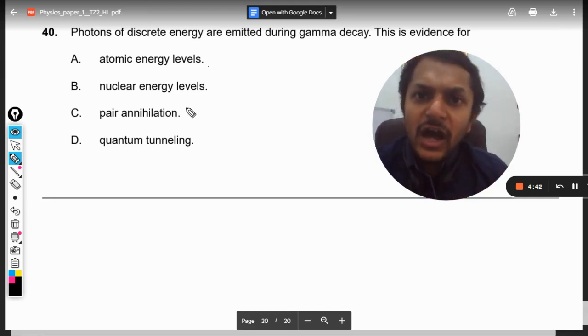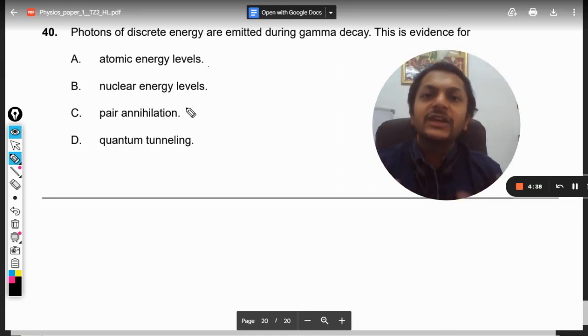Whenever alpha, beta, or gamma decay is taking place, obviously something is happening inside the nucleus. So the obvious answer will be nuclear energy levels. It cannot be pair annihilation, it cannot be quantum tunneling, it cannot be atomic energy levels.